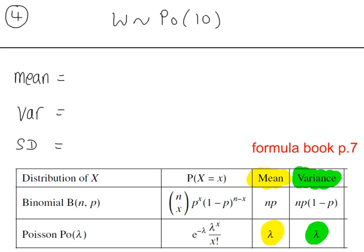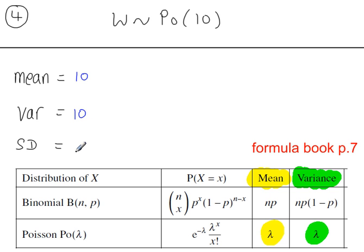Example 4. We have a Poisson distribution with a mean of 10. Since the mean and the variance are both lambda and are equal, the variance is also 10. Therefore, the standard deviation, which is the square root of the variance, will be the square root of 10.